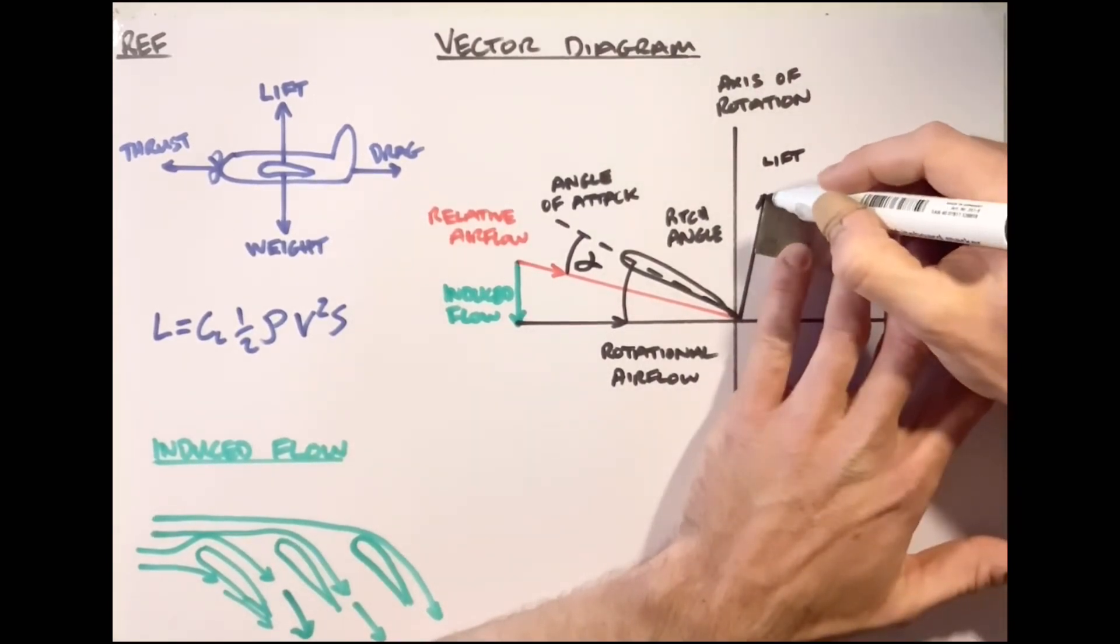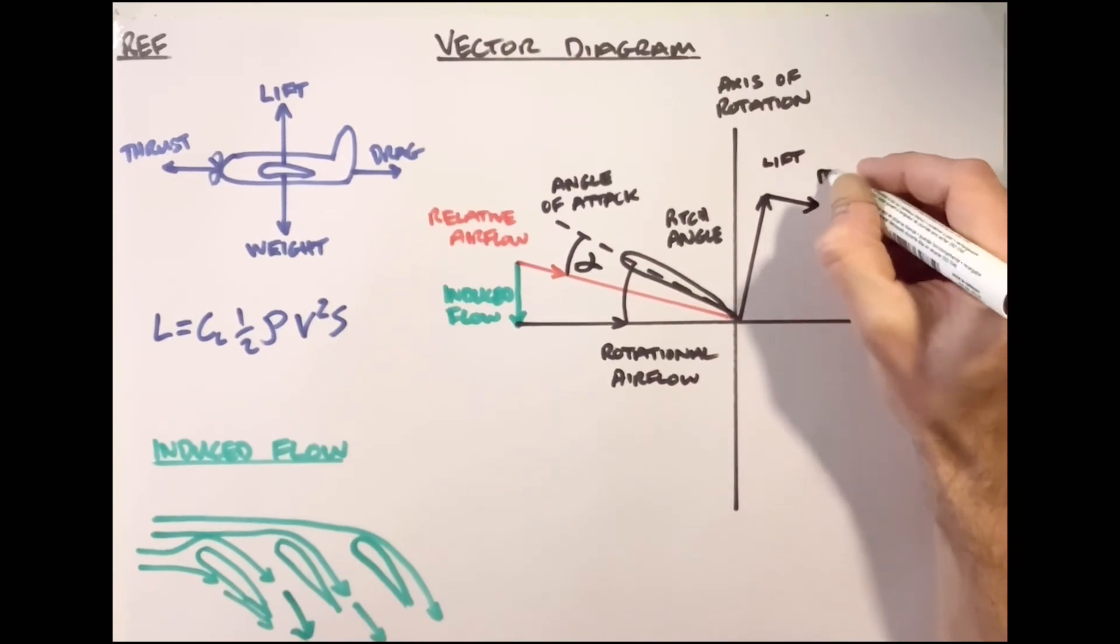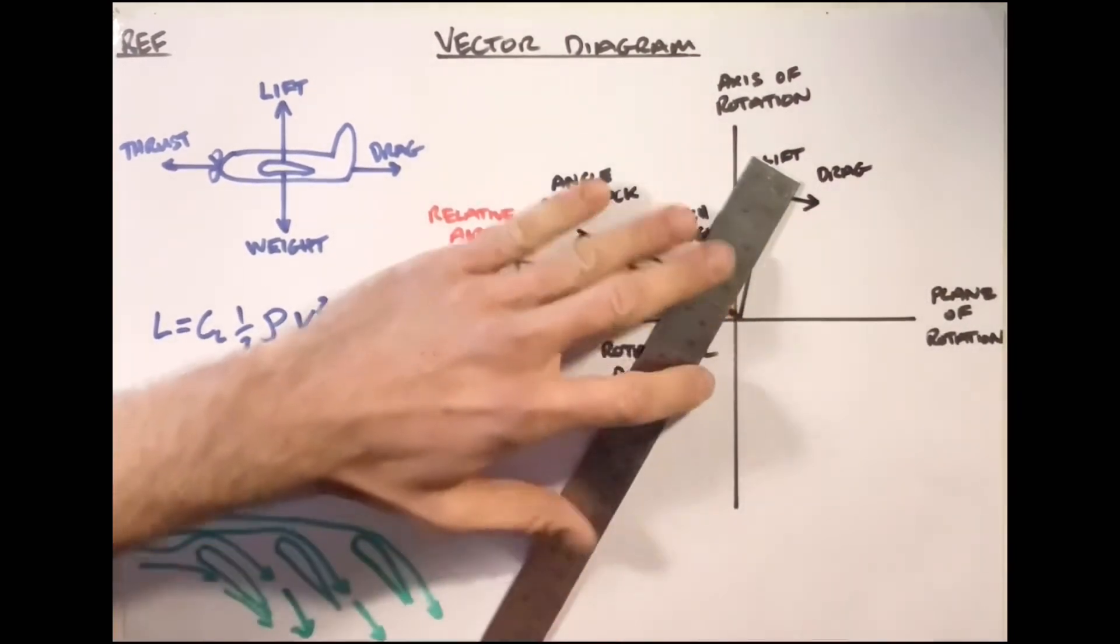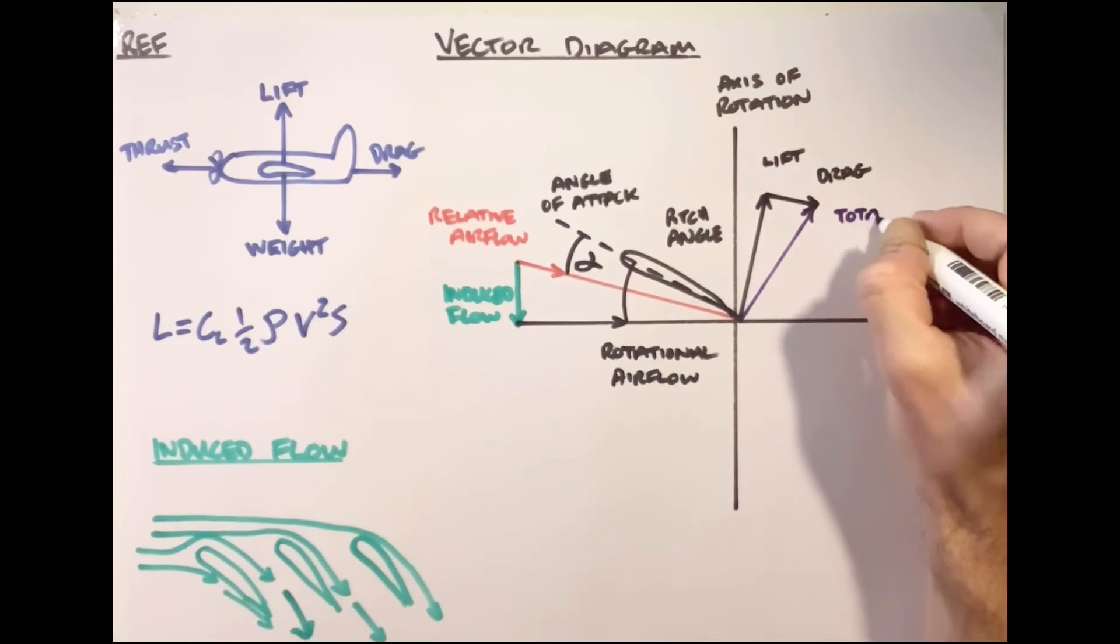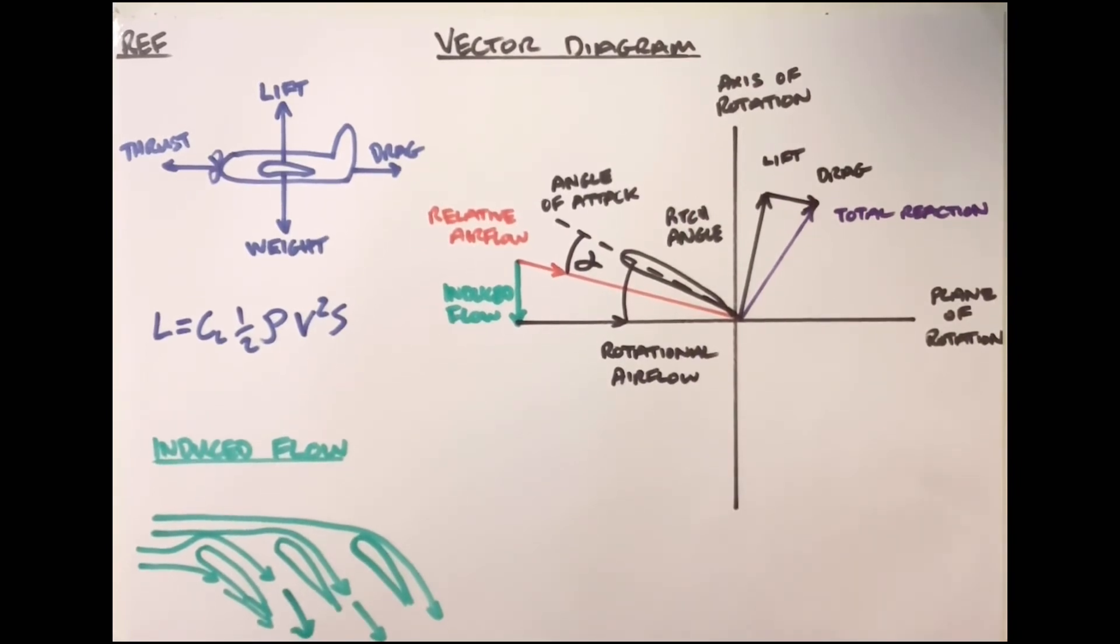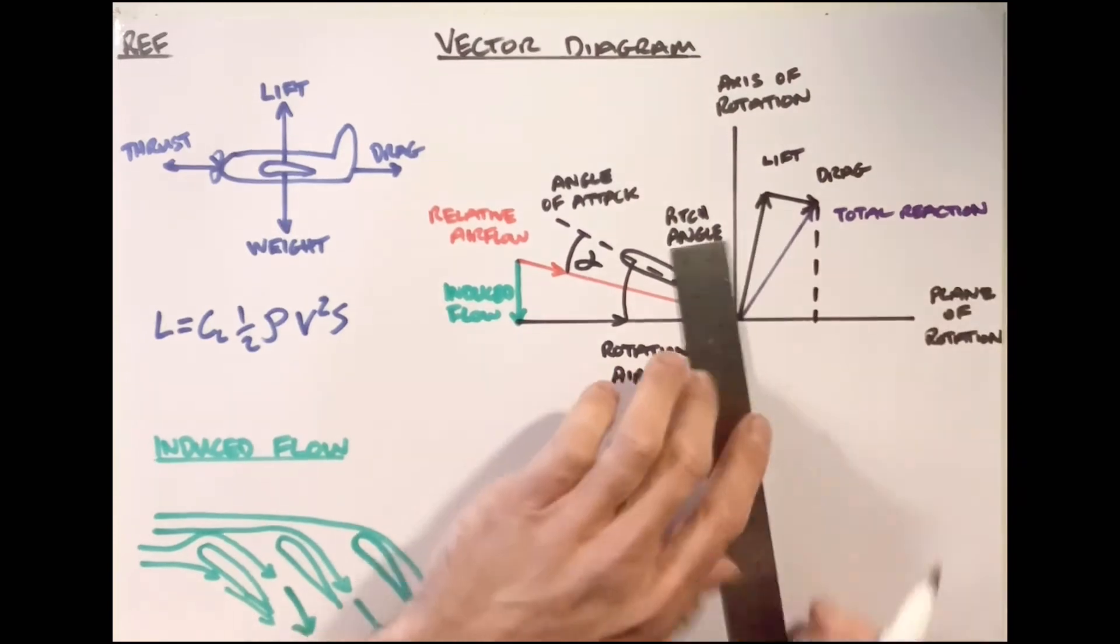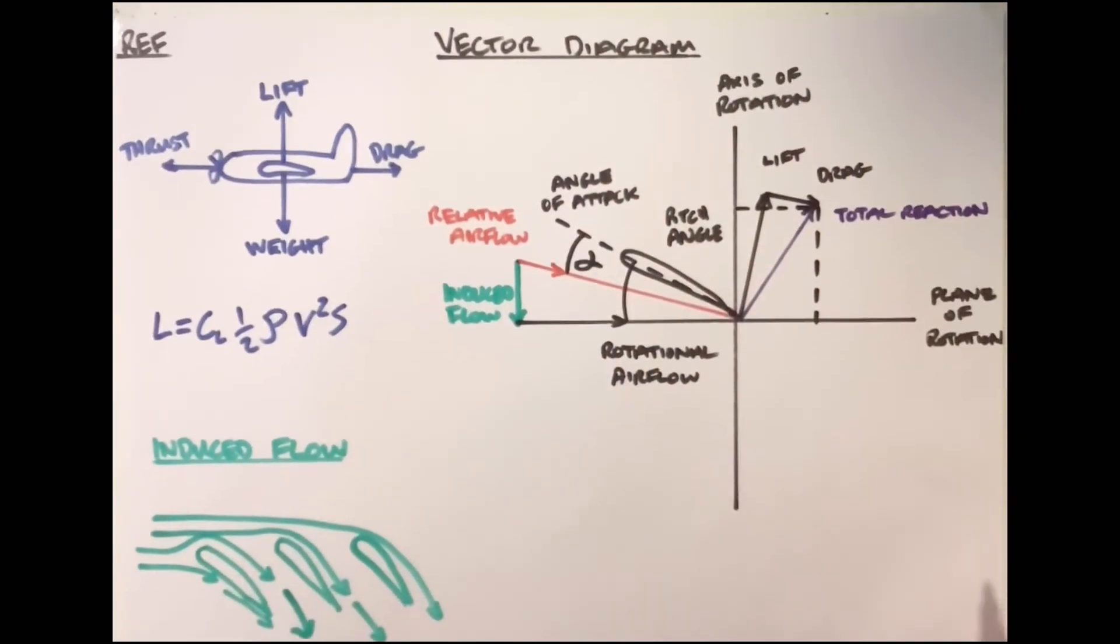Again, same in an aeroplane and a helicopter. You're going to get drag. And then we're back to this resolution of vectors again. So we've got two vectors, but they're neither horizontal or vertical. So what we're going to do is join them up. So we get what is called a total reaction. And that will essentially combine these two vectors into one simple vector, which we can now resolve horizontally and vertically.